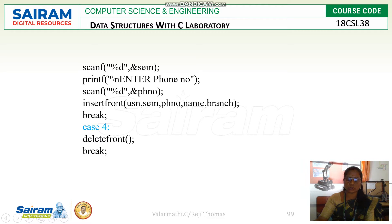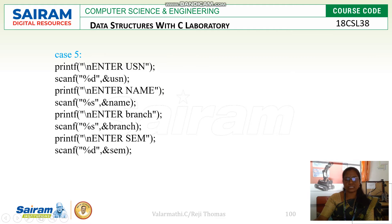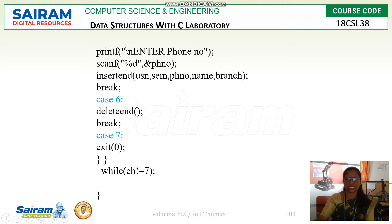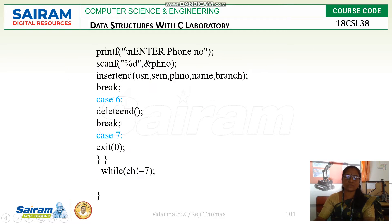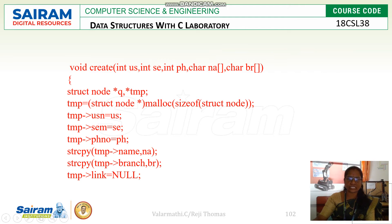Then delete front — delete front is used to delete one element from the front of the singly linked list. Case 5 is to create a new element or add a new node at the end of the singly linked list. Case 6 is to delete end. Likewise, each user-driven case is written here.